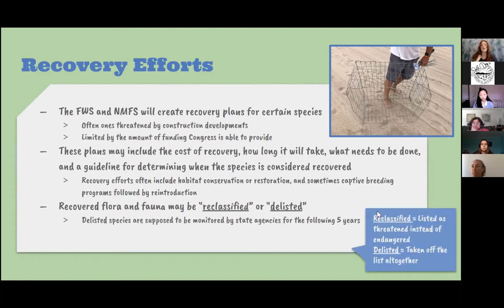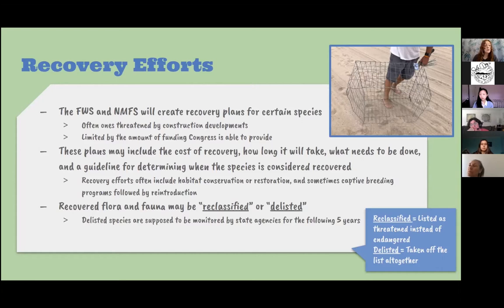Reclassified means a species would be listed as threatened instead of endangered. Delisted means they're taken off the list entirely and are not threatened or endangered. Species that are delisted are supposed to be monitored by state agencies for the next five years. We can see an OC Habitats member participating in recovery efforts of the snowy plover, a threatened species with habitat along the beaches of Orange County, placing protective cages over nests to prevent eggs from being destroyed.